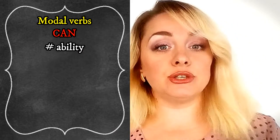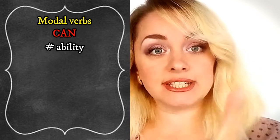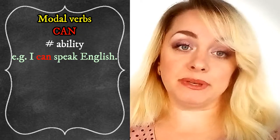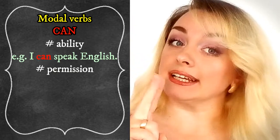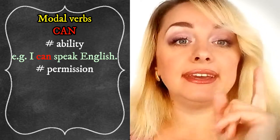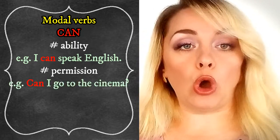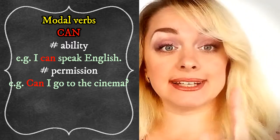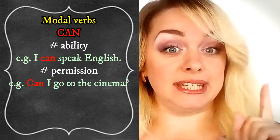We use 'can' to express ability to do something in the present tense. For example, 'I can speak English' — it's in the present tense. The second use: we use 'can' to express permission to do something in the present. For example, 'Can I go to the cinema?' — we are asking our mother, father, or boyfriend. It's a privilege.